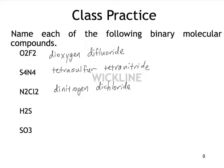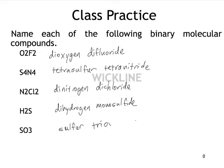For H2S, I would say dihydrogen monosulfide — I am allowed to use the prefix mono for the second element. For SO3, you would not use the prefix mono for sulfur since it's the first element, so we just say sulfur. But there are three oxygens, so I would say sulfur trioxide.